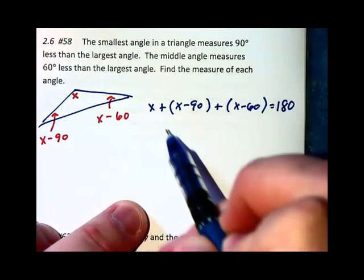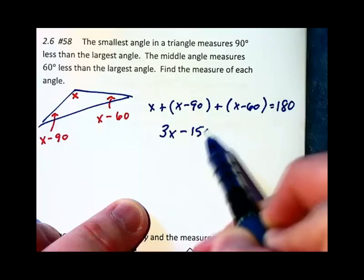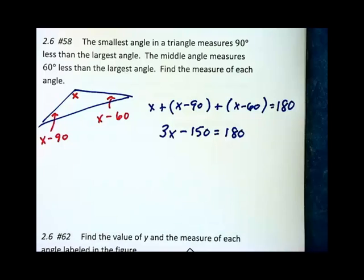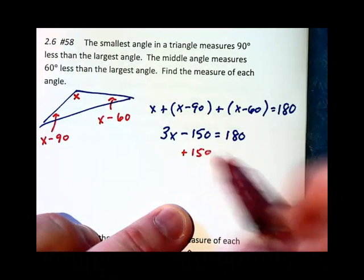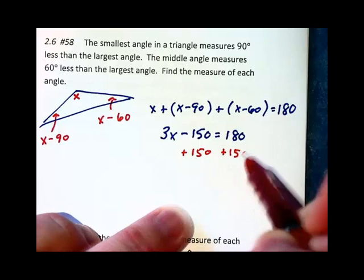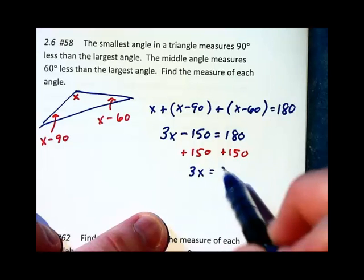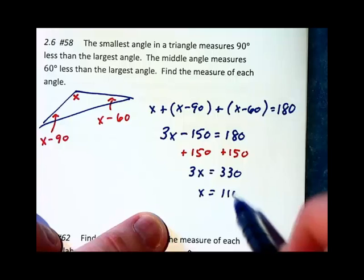Combining like terms, I'm going to have 3x minus 150 equals 180 degrees. We're going to then add 150 to each side of this equation. That will give us 3x is equal to 330 degrees. And therefore, x is equal to 110.